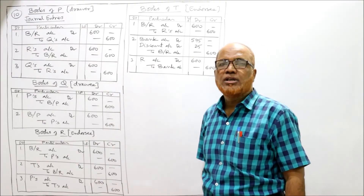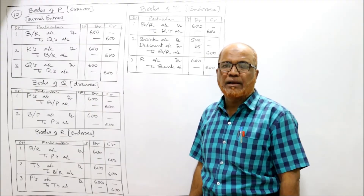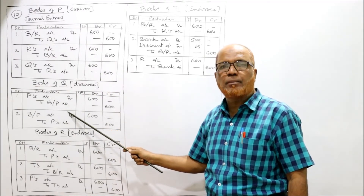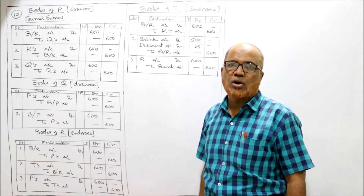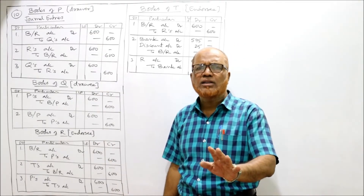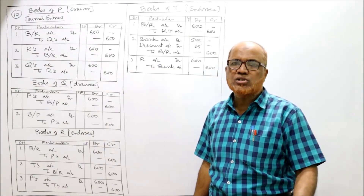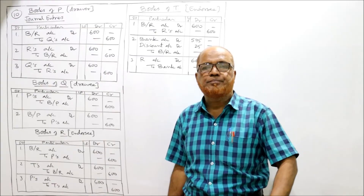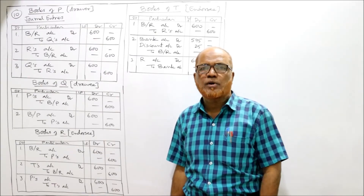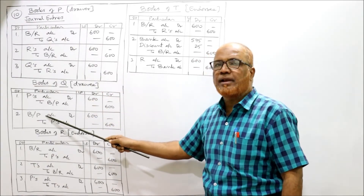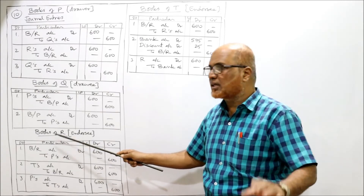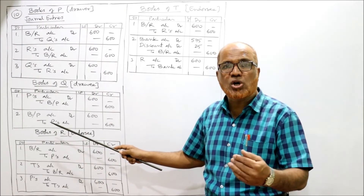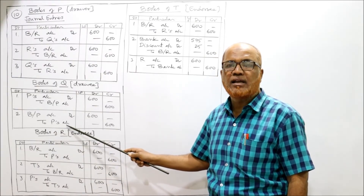In the books of Q — the drawee/acceptor. When he accepts the bill: P's account debit to bills payable 600, being the bill accepted. Q is not concerned with endorsements. On the due date when the bill is dishonored: bills payable account debit to P's account 600. If the bill had been honored it would be bills payable to cash, but since dishonored it is bills payable to P's account, being the bill dishonored.